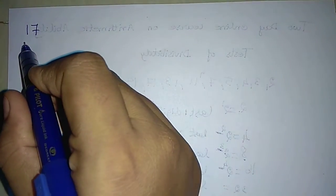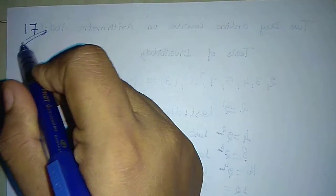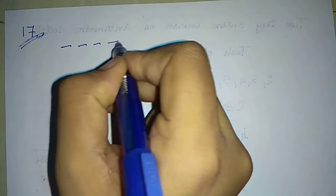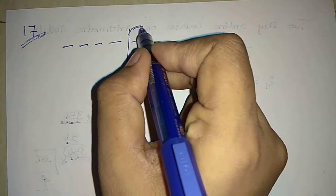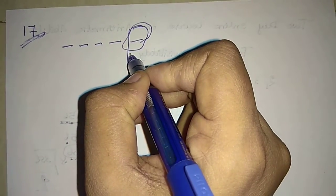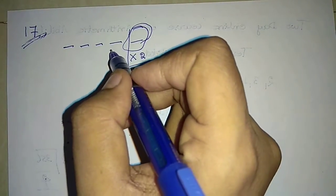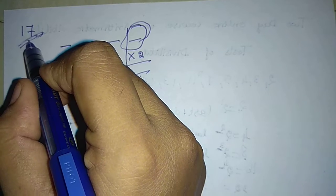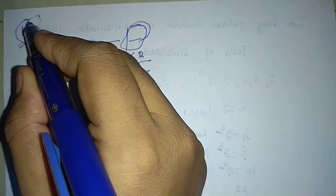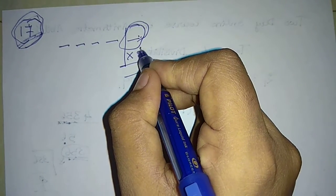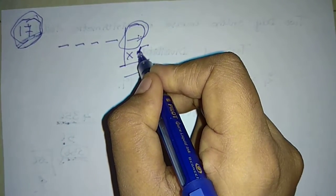Now, for the number 17, the procedure for both 7 and 17 are almost equal but in one place it will differ. In 7, we take the last digit, multiply by 2, and subtract this answer from the remaining digits. But in the process of checking divisibility by 17, we have to multiply this number by 5 instead.